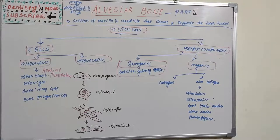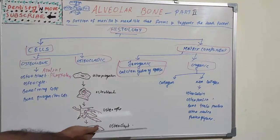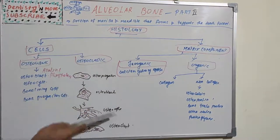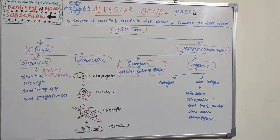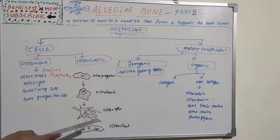Osteoclasts are active on less than one percent of bone surface. They lie in Howship's lacunae, have acidophilic cytoplasm, and will have a ruffled border. The ruffled border faces the bone because hydrolytic enzymes are secreted there and it has increased surface area. At the periphery of the ruffled border, the plasma membrane is smooth and closely opposed to the bone surface, and the adjacent cytoplasm is devoid of cell organelles, being rich in actin and talin proteins associated with cell adhesion — this region is known as the clear zone.